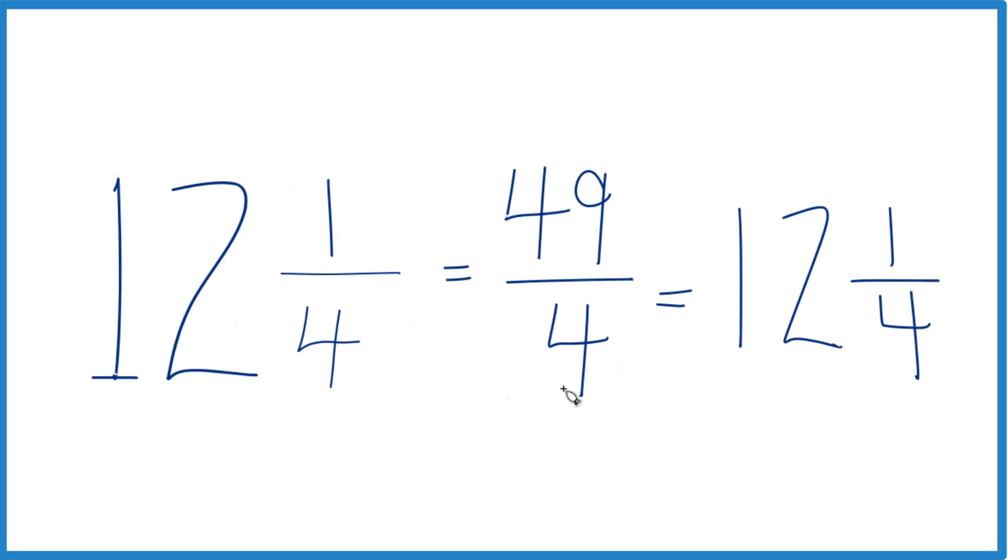And these numbers, they are equivalent. They're equal. 12 and 1/4, that mixed number has the same value as 49/4, the improper fraction. It's just that we're writing this in a little bit different format.